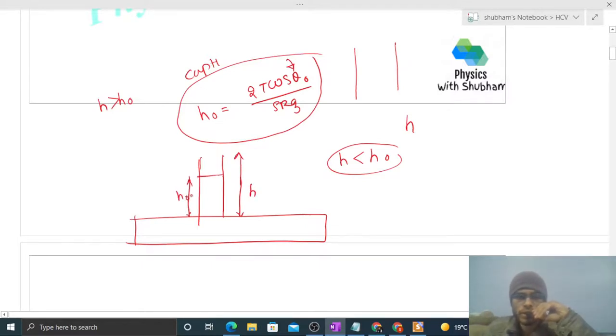So if h is greater than h naught, in that case this equation is valid. What will happen if h naught is greater than h? In that case, let's say the height of the capillary is only this much, and the height of water in this capillary is more than this h. So will this liquid come out of the tube? No, it won't.